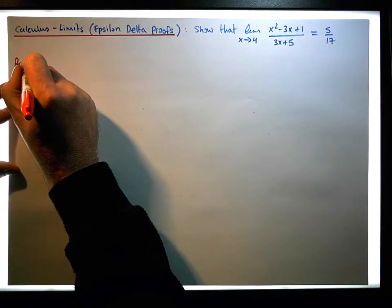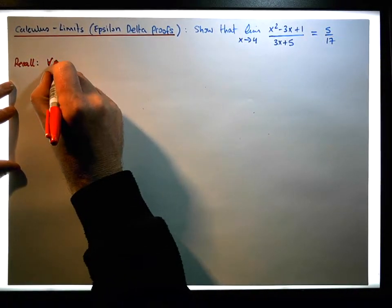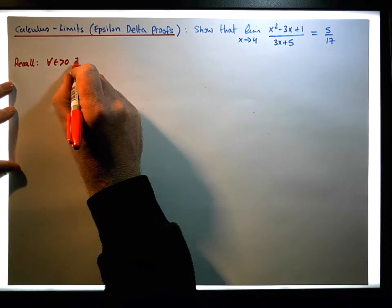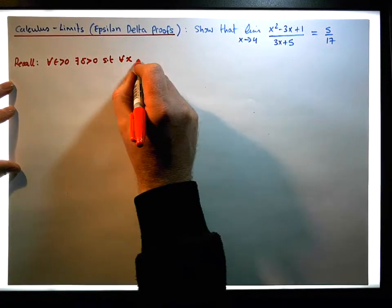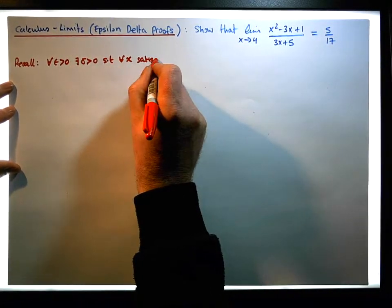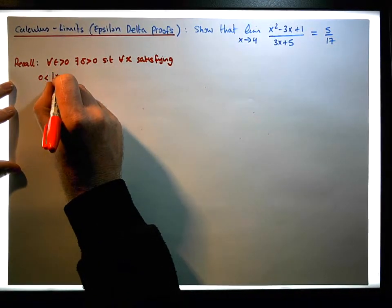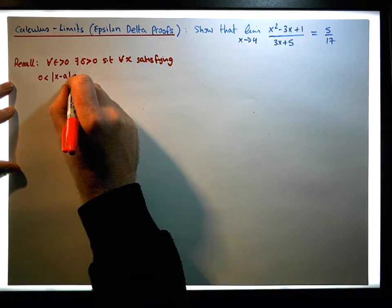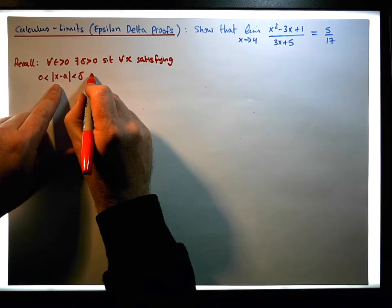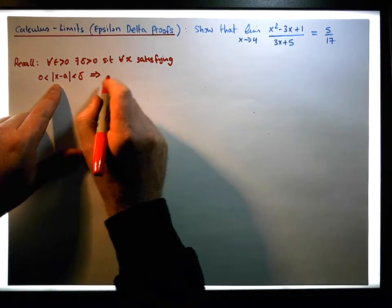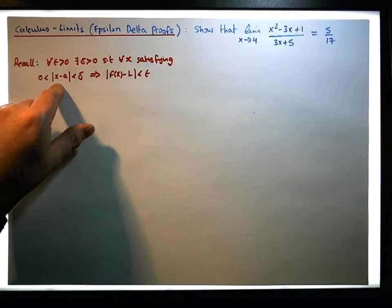So recall, what we need to show is that for each and every epsilon greater than 0, there exists a delta greater than 0, such that for all x, for each and every x satisfying the condition that the absolute value of x minus a is greater than 0 and less than delta, that from this particular fact we can imply that f of x minus L is in fact less than epsilon.